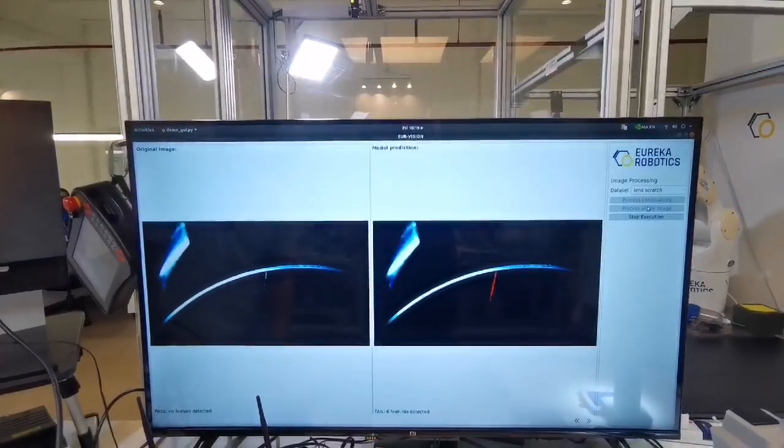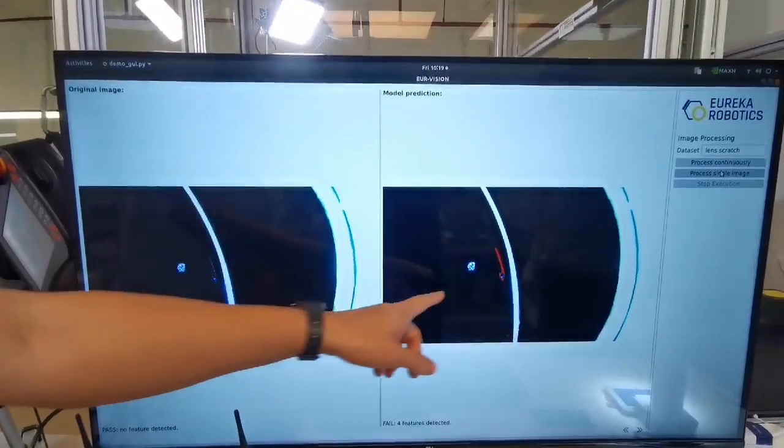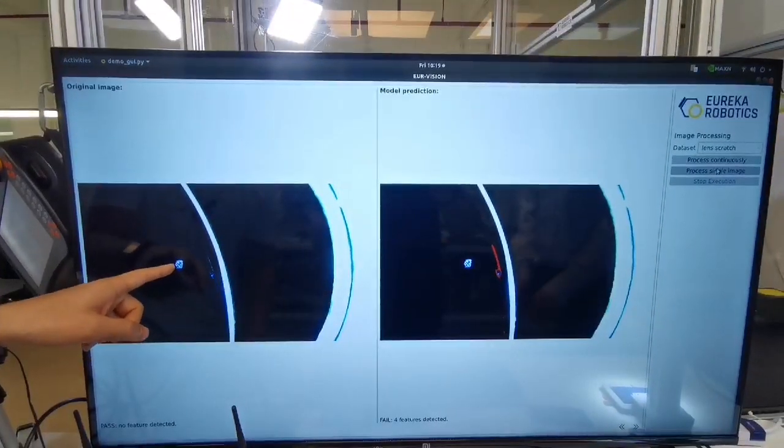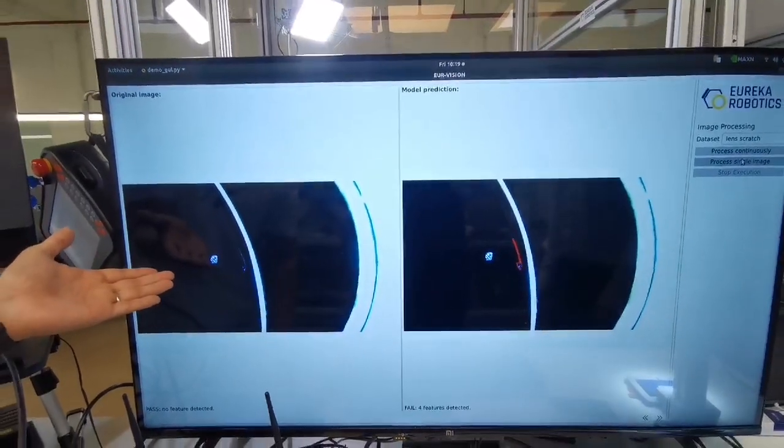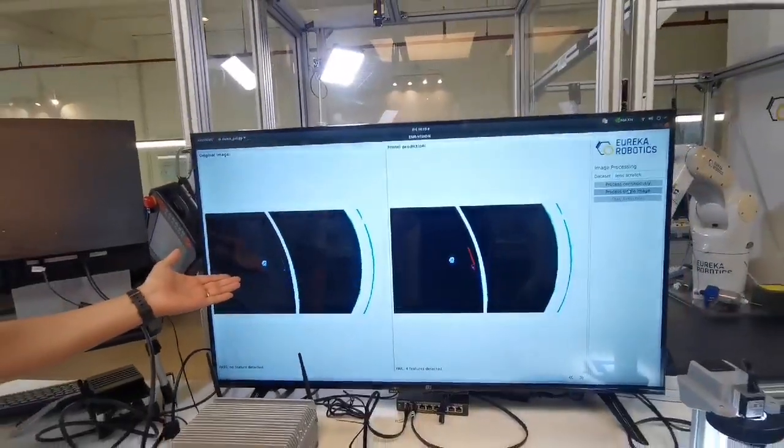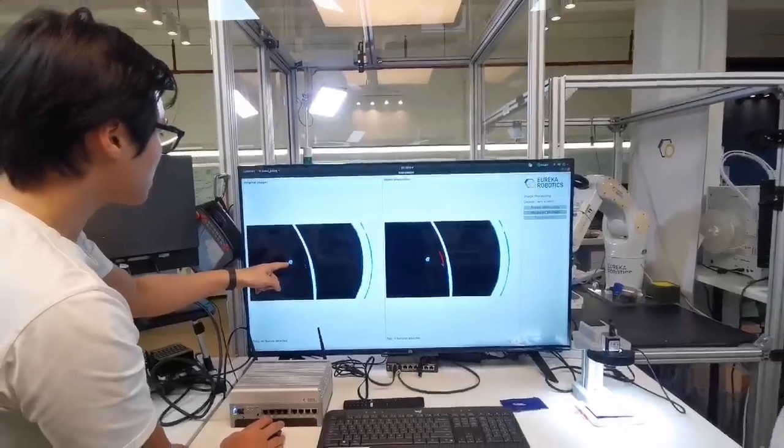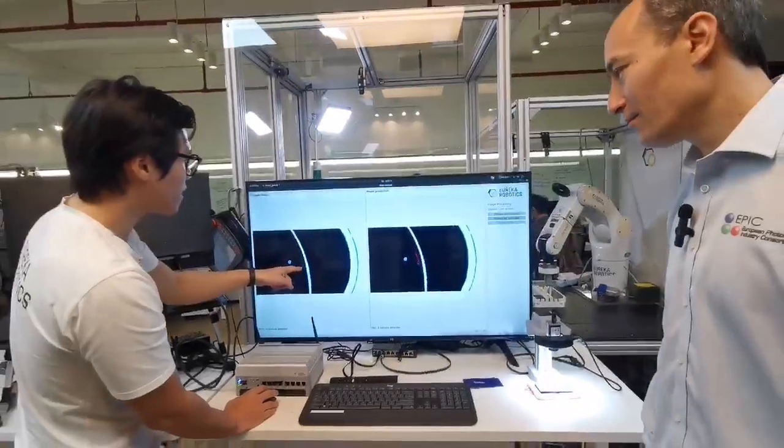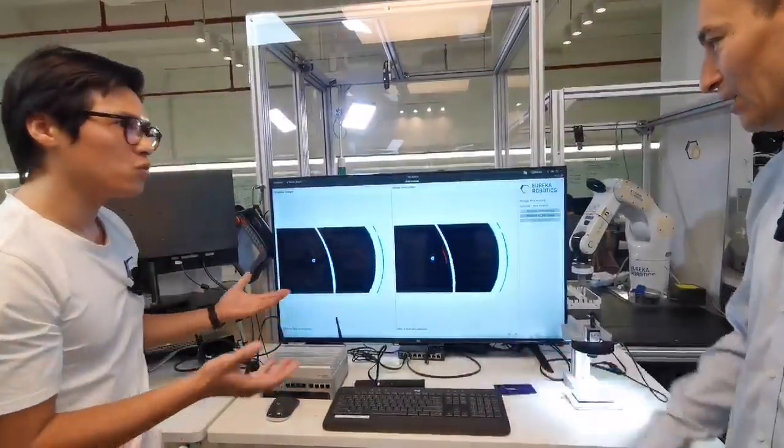We can look at another image here. So you can see here, this image is quite difficult to tell which is the defect and which is the non-defect. Actually, this is just a marking, but this is the actual defect. And the AI after training is able to distinguish.